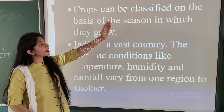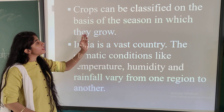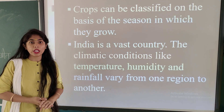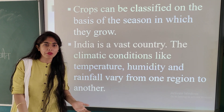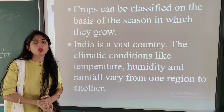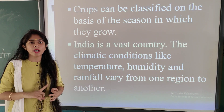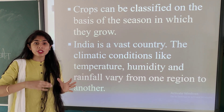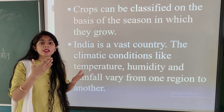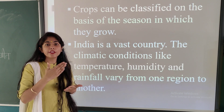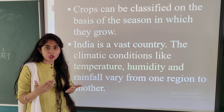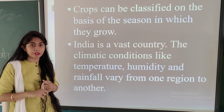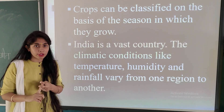Crops are classified on the basis of the seasons in which they grow. In India, there are a variety of seasons — winter, summer, and others. Based on these weather conditions, crops have been differentiated into several groups. The two major groups are kharif crops and rabi crops.